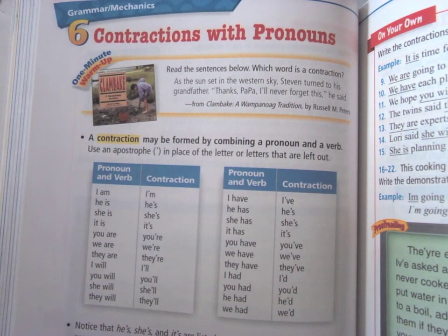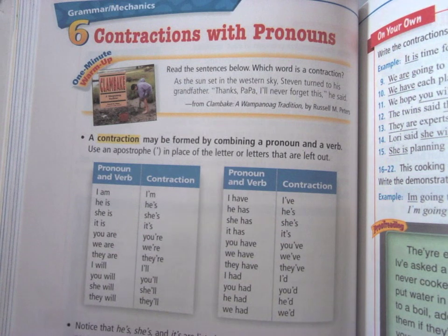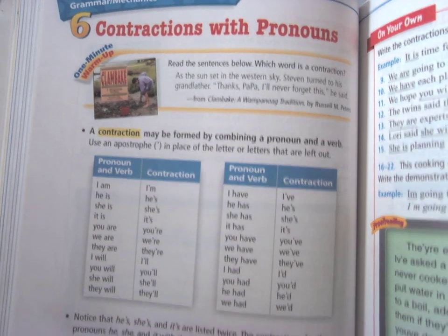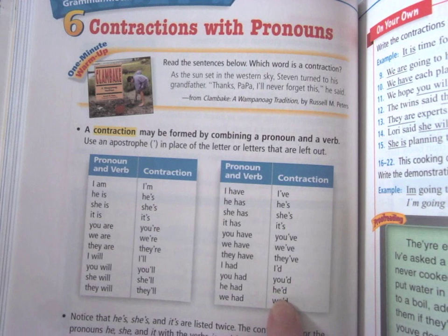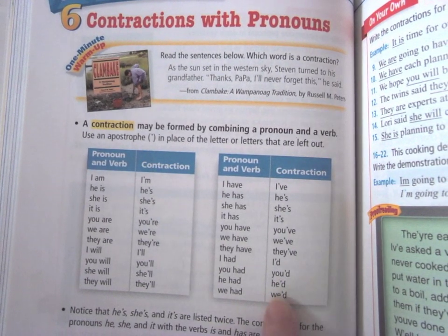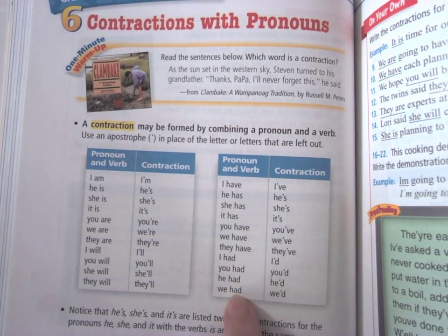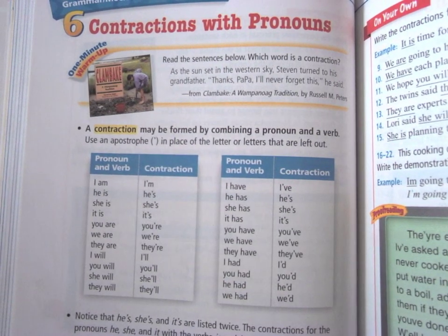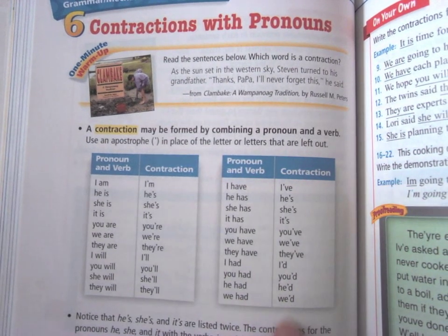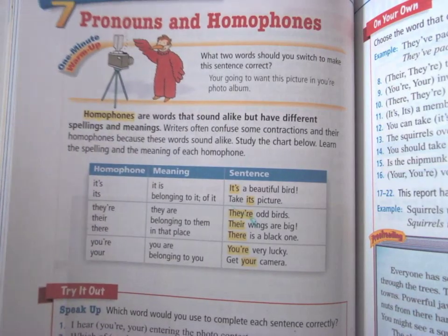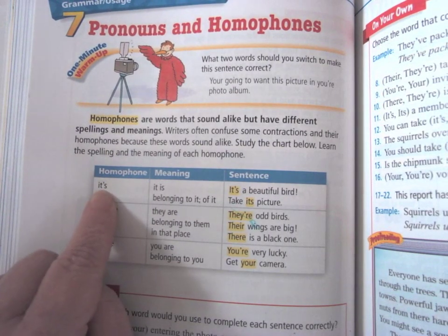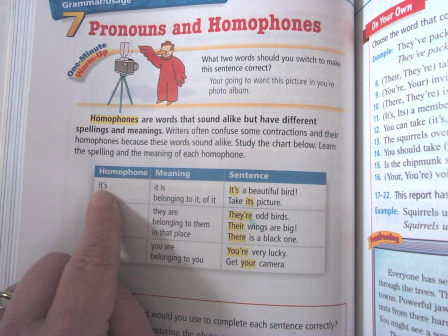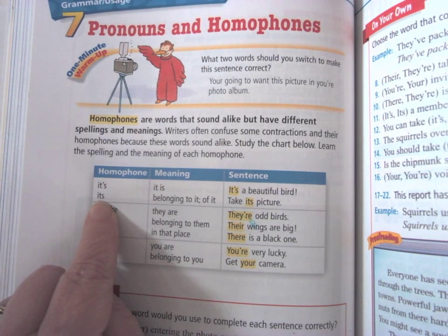Contractions — you have a list. Make sure your contractions are in the right spot and you're using the right words. Next year you get into things like 'you would,' 'you had,' 'he would,' 'he had,' but this year it's all just the list here. So you don't have to worry about coming up with a different word than what's listed. Those are your two lists of contractions with pronouns. Pronouns and homophones — the apostrophe is going to indicate 'it is.'